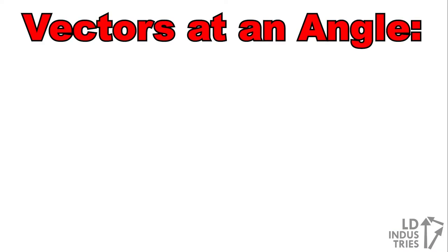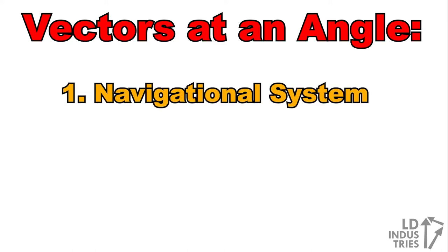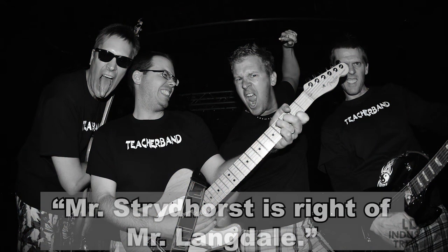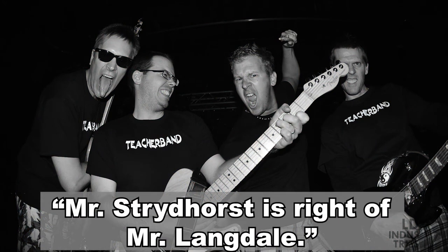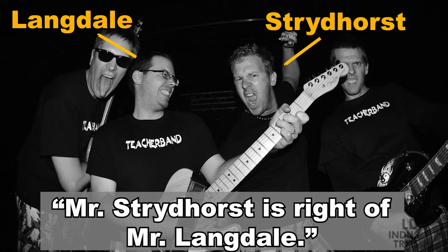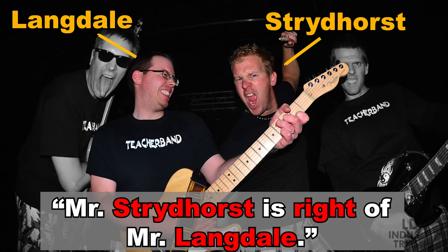Next we will look at vectors that are at an angle. We have two systems for writing out the notations of vectors at angles: the navigational system and the square bracket system. The navigational system works on a weird principle of the English language. Let's check out this awesome photo of Teacher Band as an example. Now let's say you knew that the drummer in Teacher Band is Mr. Stridehorst, but you don't actually know what he looks like. So I could tell you that Mr. Stridehorst is right of Mr. Langdale. Now let's think about how we said that. Stridehorst is right of Langdale. So to work out who Stridehorst is, you needed to start off at the end of the sentence and find Langdale first. Then you move to the right to find Stridehorst. This is exactly how the navigational system works.